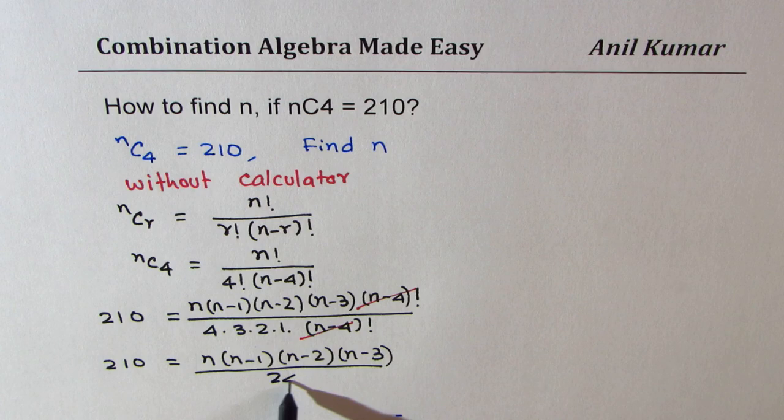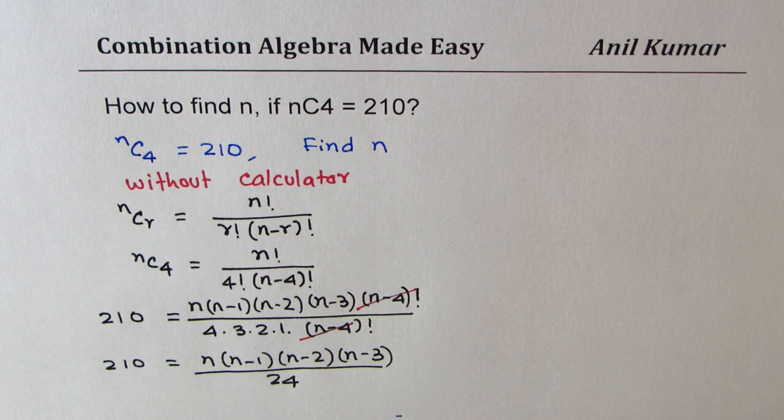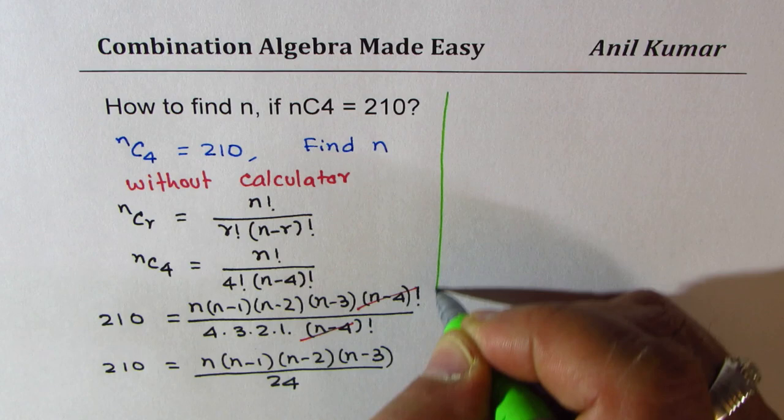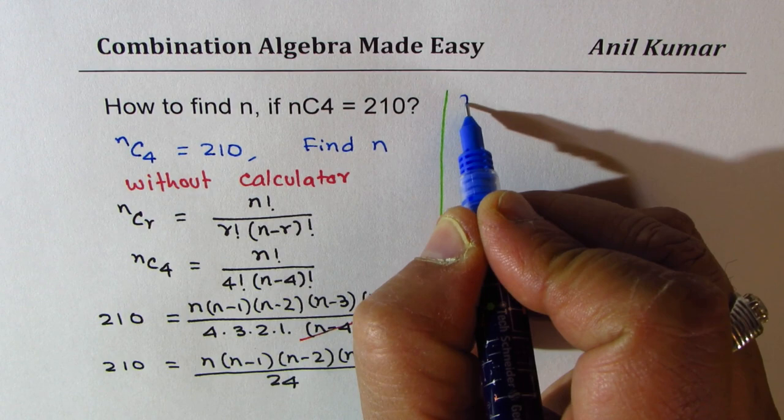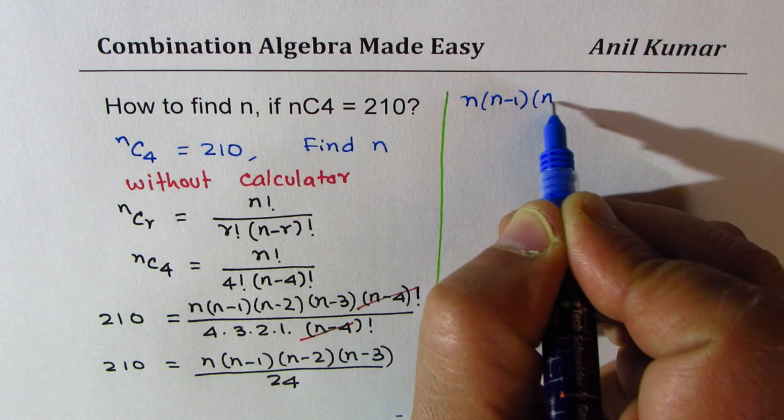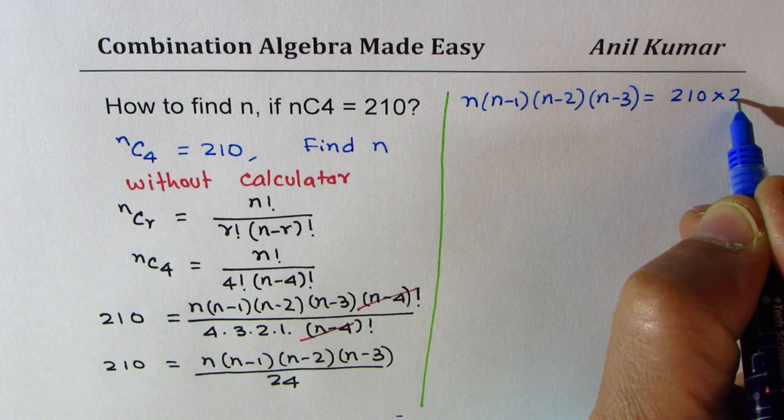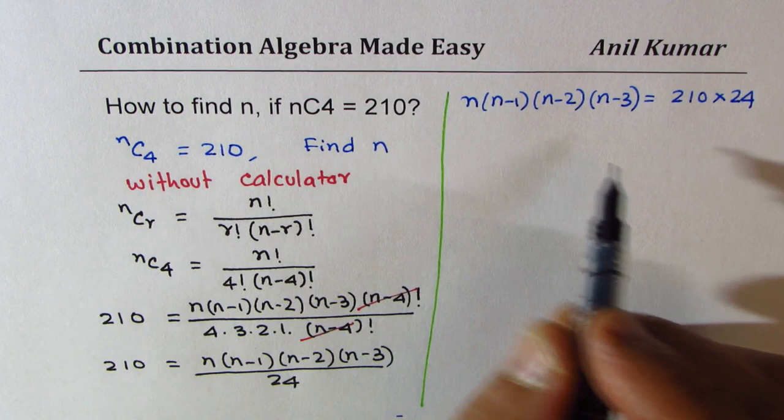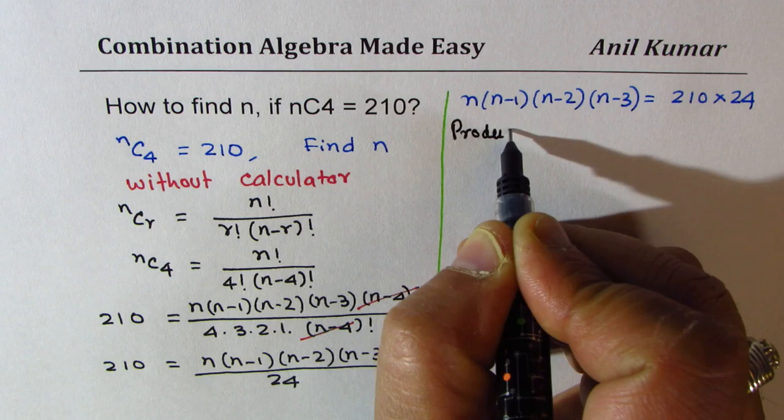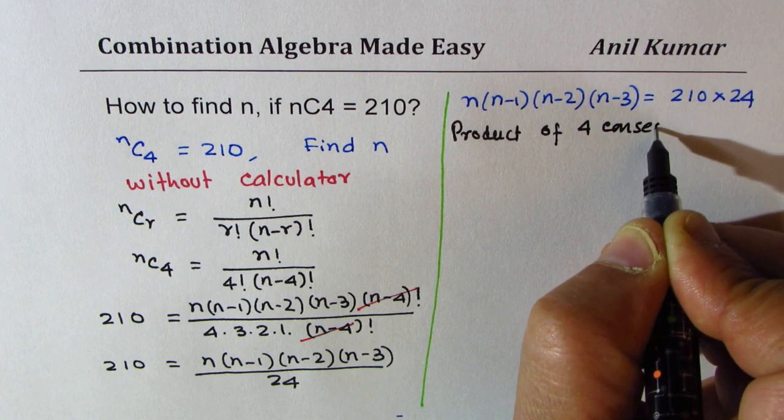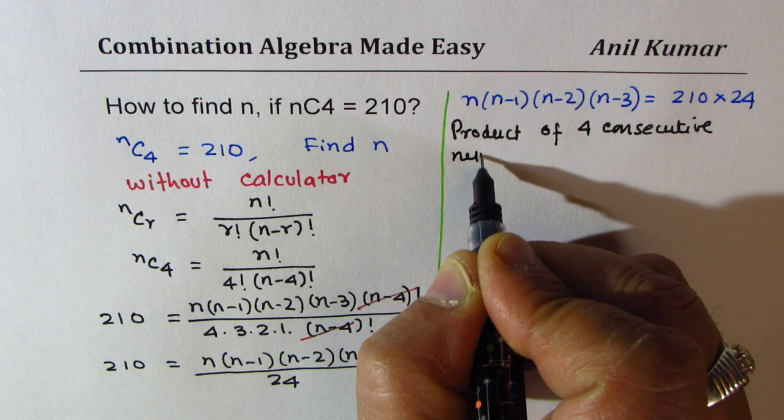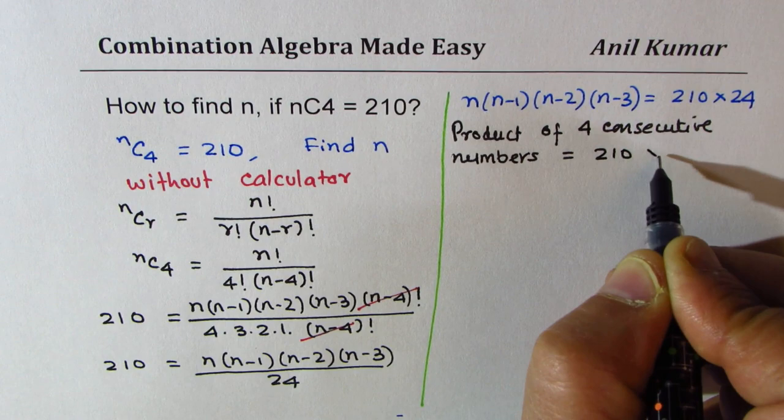If you look at this equation where we need to solve for n, we could actually write this as product of 4 numbers: n times n minus 1 times n minus 2 times n minus 3 equal to 210 times 24. That is what we need. So if you think about it, we are looking for product of 4 consecutive numbers equal to 210 times 24.